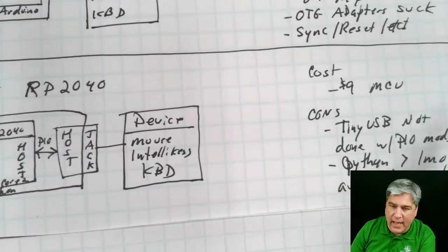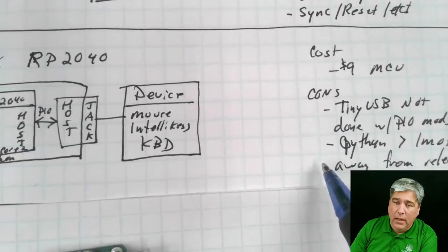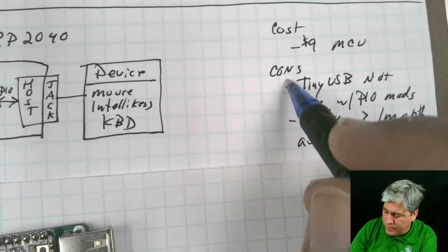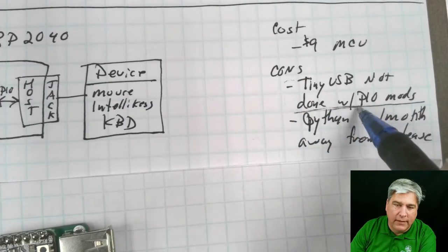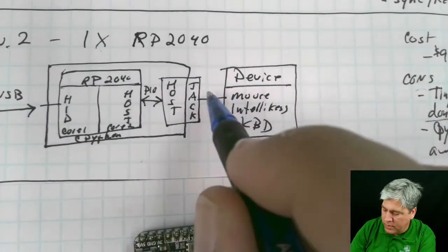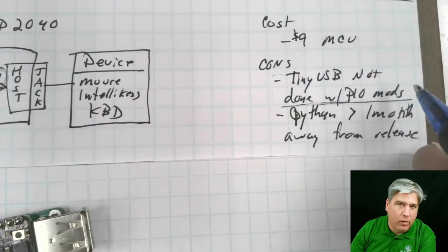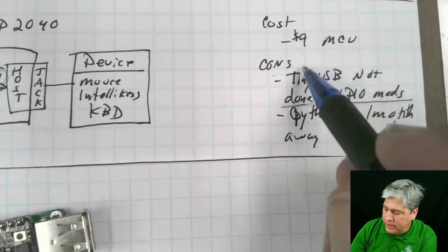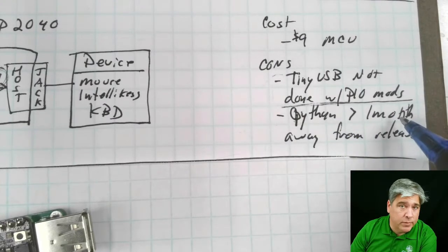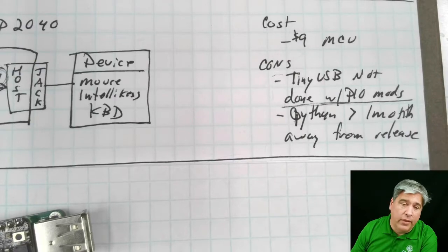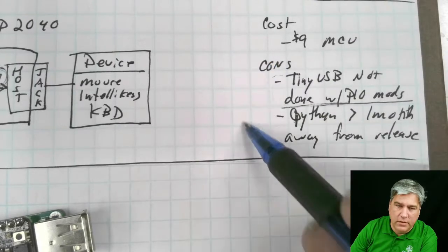The idea here is that this will run within one chip. The cost, obviously, is in half. So it's about $9. The cons are TinyUSB, which is what we need to make this work, doesn't work yet. It doesn't have all the mods needed in order to do this little PIO piece right here. We've been waiting on it a while. They're working on it. It's going to take some amount of time. Once TinyUSB works, there's a second piece that says CircuitPython has to support USB host. And that's going to be at least another month before that happens.